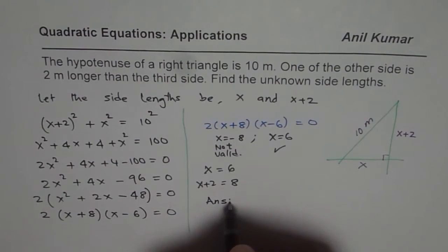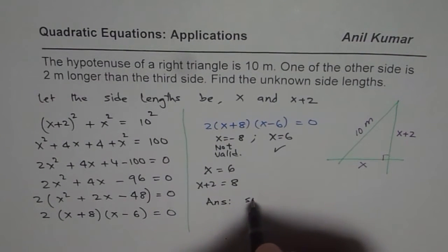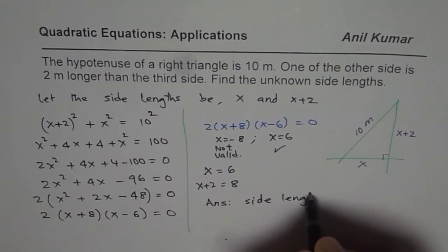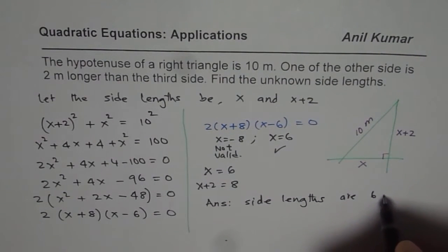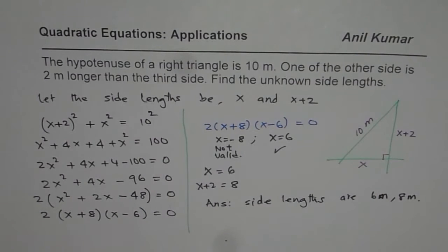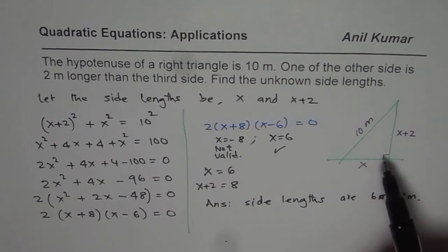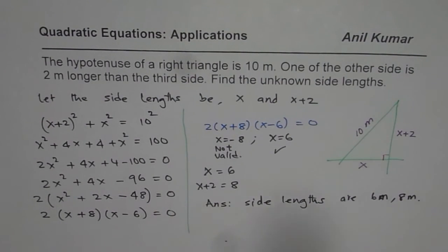We can write the answer: the side lengths of the triangle are 6 meters and 8 meters. The approach is: first, sketch the triangle; define your variables; relate the variables using the given conditions — here, the Pythagorean theorem was very helpful for a right triangle. Then use factoring or the quadratic formula to solve the quadratic equation. I hope that helps. Thank you.